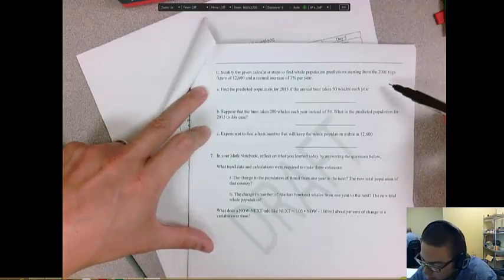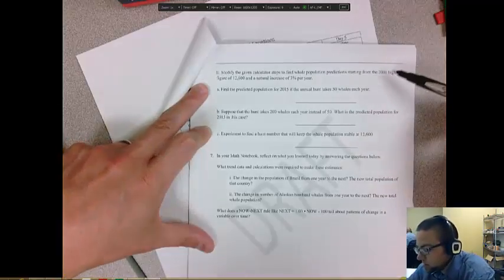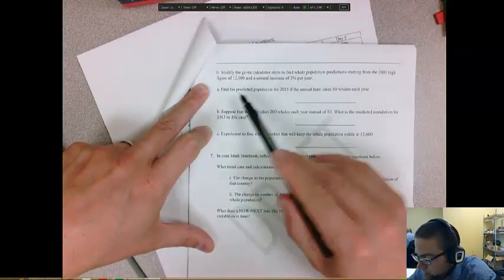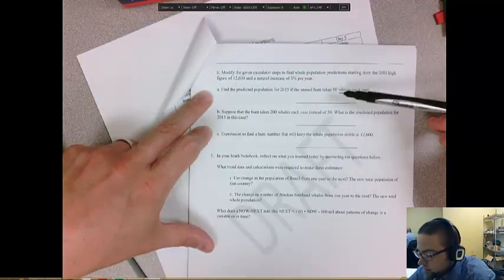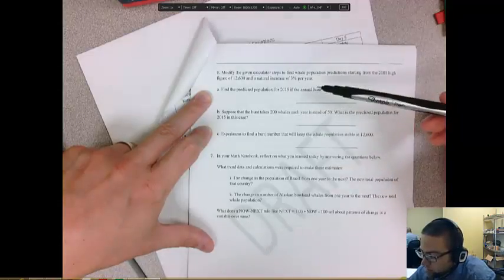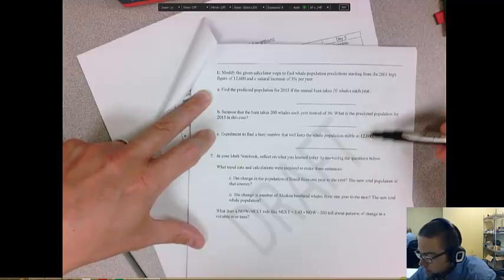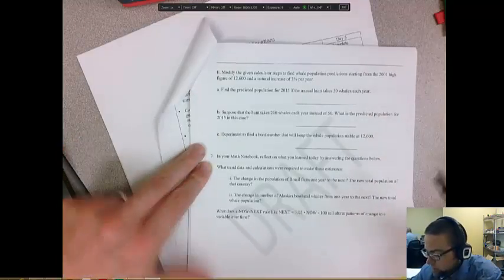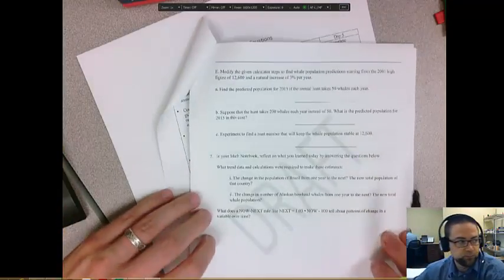Now you're going to modify the given calculator steps to find the total whale population prediction starting from 2001's high figure. So instead of using the 7,700, use the 12,600 and a natural increase of 3% per year. And then predict the population in 2015. And answer those two questions. And then write in your notebook the answer to that. Okay.